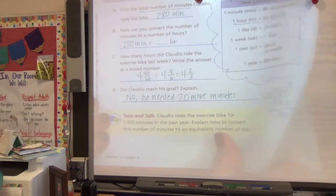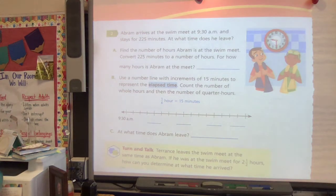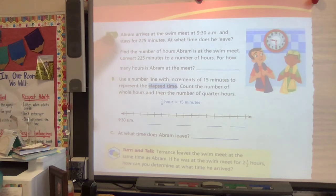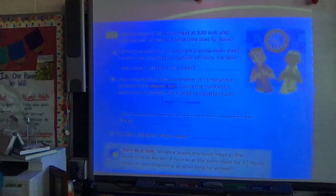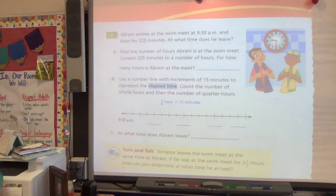So let's turn the page and this at the top says, Abram arrives at the swim meet at 9:30 AM and stays for 225 minutes. At what time does he leave? So there's different ways that you could solve this, but probably the easier way would be to find the number of hours that he's there because we can count up hours a lot quicker than we can count up those minutes.